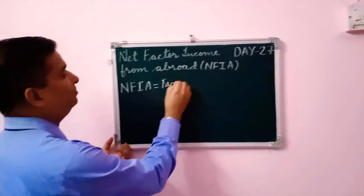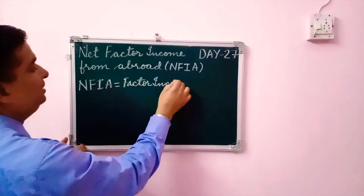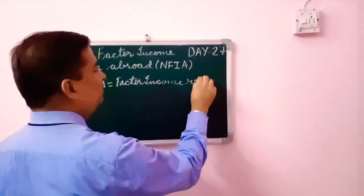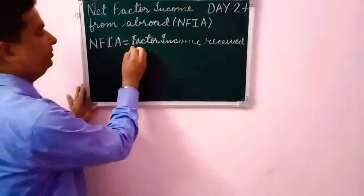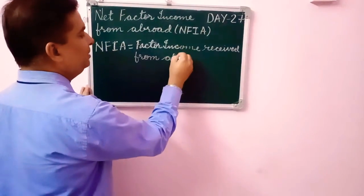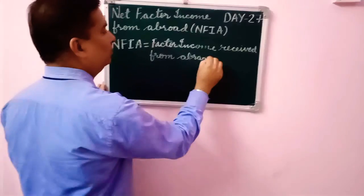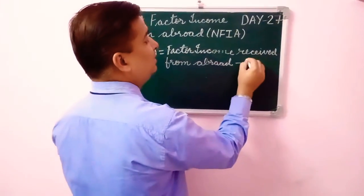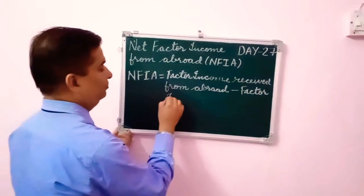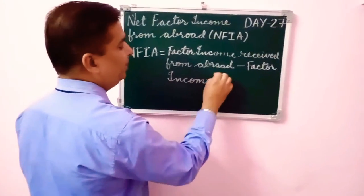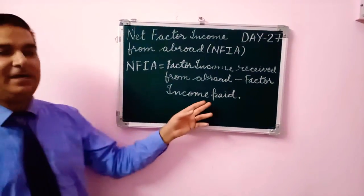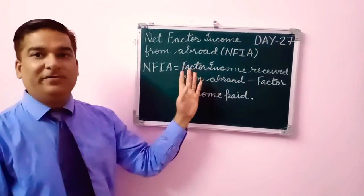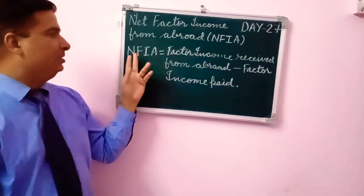NFIA equals factor income received from abroad minus factor income paid abroad or to foreign persons. Factor income received from abroad is the income that countries receive from abroad. From this we subtract the factor income paid to foreign persons. The difference is the Net Factor Income from Abroad, which we call NFIA.